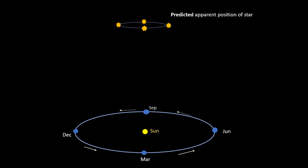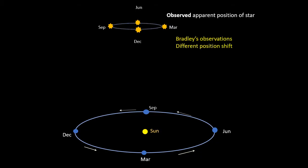However, the position shift Bradley observed is shown here. And as you can see, although Eltanin did move in a circle, its position shift was different than if parallax were the cause. In trying to explain his observations, Bradley discovered an entirely different effect, which became called stellar aberration.